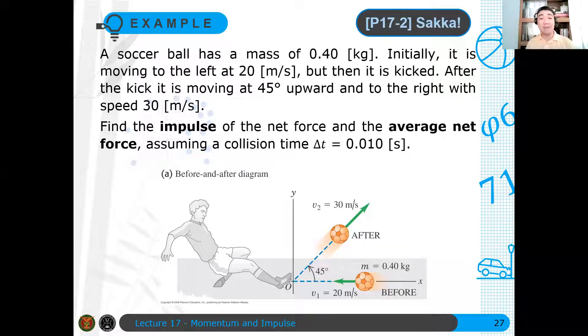A soccer ball has a mass of 0.40 kilograms. Initially, it is moving to the left at 20 meters per second, but then it is kicked. After the kick, it is now moving at 45 degrees upward and to the right with a speed of 30 meters per second. First, find the impulse of the net force and the average net force, assuming a collision time delta t is 0.01 seconds.